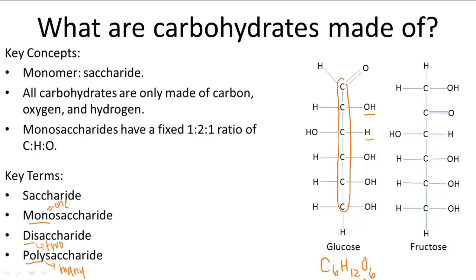The two most important monosaccharides are glucose and fructose, which are shown here. They're both written out as C6H12O6, but their difference is in their structures — you can see them lined up together next to each other right here.